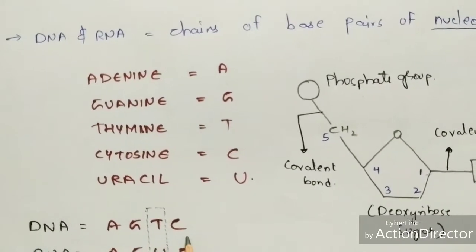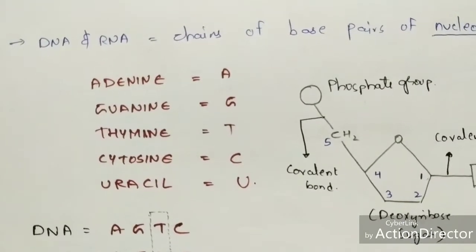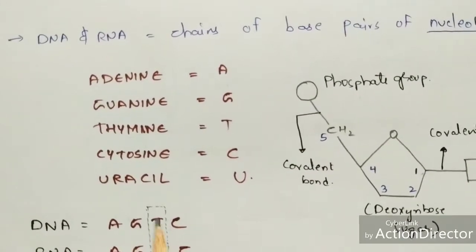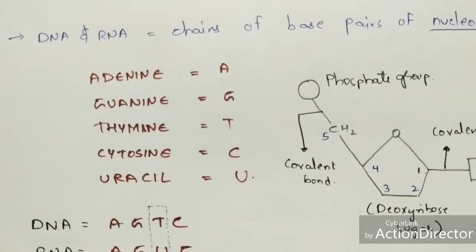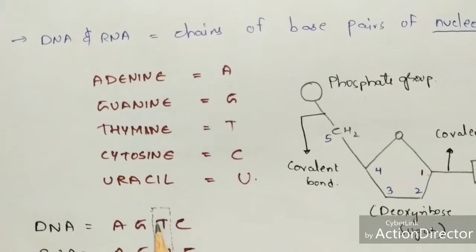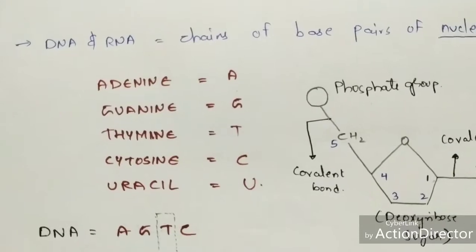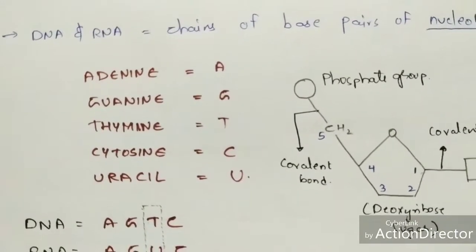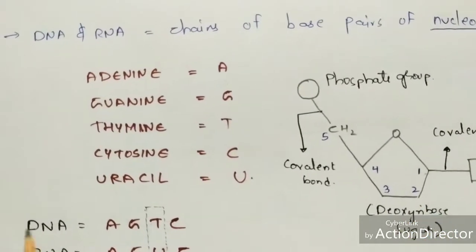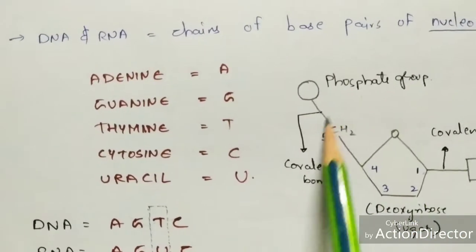So remember: DNA consists of thymine (T), whereas RNA contains uracil instead of thymine. Also, if the nucleotide structure consists of deoxyribose sugar it is called DNA, and if it consists of ribose sugar it is called RNA.